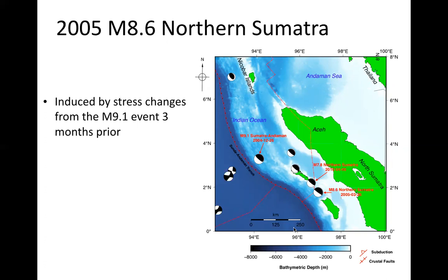This is a good example of how megathrust events can also lead to other megathrust events. Several other events occurred farther south, such as the M8.4 off the coast of southern Sumatra in 2007 and the M7.7 off the coast of western Java in 2006, further attesting to the activity within the Sunda-Java Trench and the ability of this subduction zone to generate large and frequent megathrusting events.